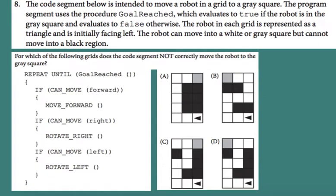We are on question 8 on AP Computer Science Principles sample exam questions. The code segment below is intended to move a robot in a grid to a gray square. The program uses the procedure Goal Reached, which evaluates to true if the robot is in the gray square and false otherwise. The robot is represented as a triangle and is initially facing left. The robot can move into a white or gray square but cannot move into a black region. The question is: for which of the following grids does the code segment NOT correctly move the robot to the gray square?